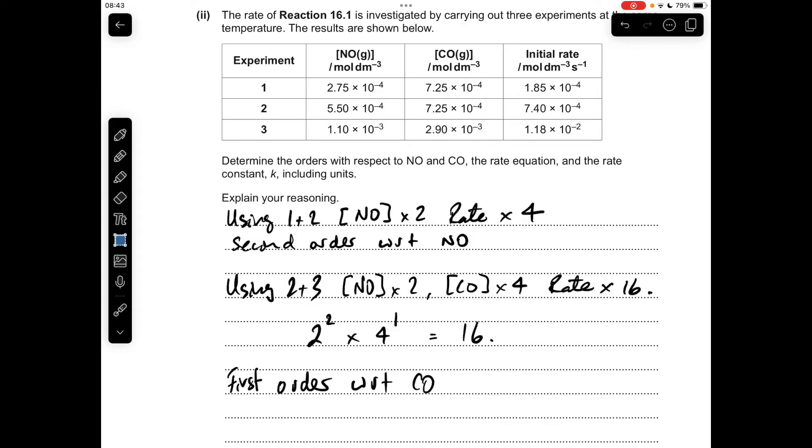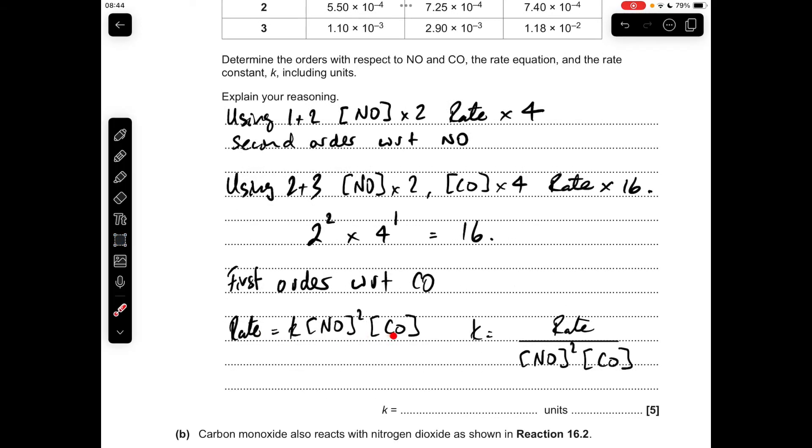So now we've got the two orders. We can put the rate equation together and then put some numbers in and get K. So there's the rate equation there, rearranged for K. So I'll just replace these with some numbers. I'm going to use experiment one. So you should get a K value of 3.37 times 10 to the 6. It doesn't matter which experiment you use. They're all done at the same temperature. So K should always be that number there.